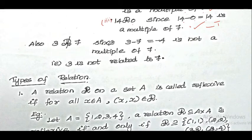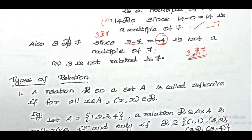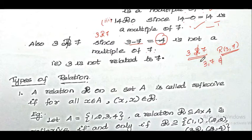Fourth example: check whether 3 is related to 7. We compute: 3 minus 7 is equal to minus 4. Minus 4 is not a multiple of 7. Therefore, 3 is not related to 7. We write this as 3 not-R 7. Since x is related to y means x minus y is a multiple of 7, and this condition fails here, we say that (3, 7) does not belong to the relation R.